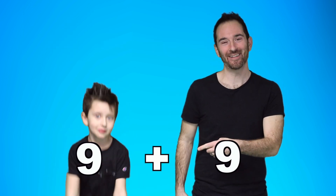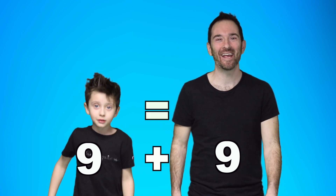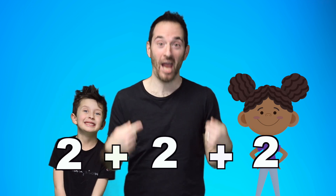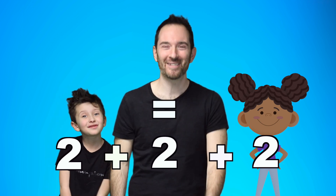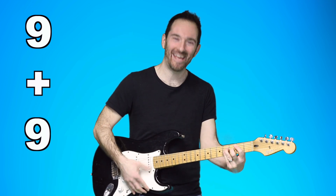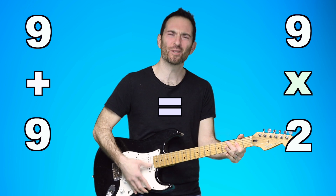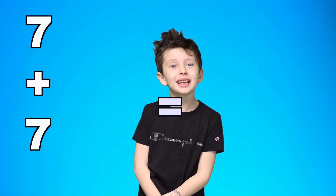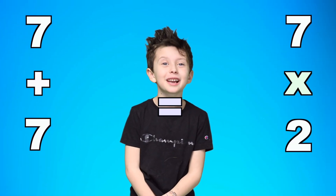9 on me, 9 on you — equals the same as 9 times 2. 2 for her, 2 for him, and 2 for me — equals the same as 2 times 3. Add the same number again and again. That is multiplication, my friend.